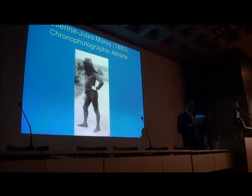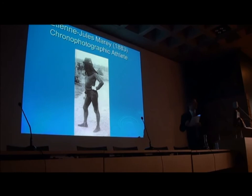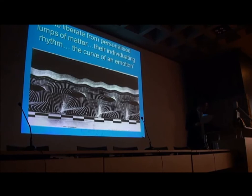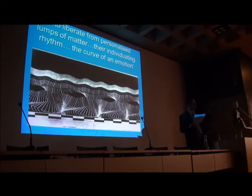What Marey did was to take photographs of athletes against a black velvet background, wearing black velvet suits but with the lines of muscular thrust picked out in white. You end up with an effect that shows, from individual photographs of a running man, how you can liberate from the personalised lumps of matter their individuating rhythm — this sort of rising and falling curve of movement. There's something extraordinarily suggestive about abstracting from the moving body an abstract curve rising and falling in space.